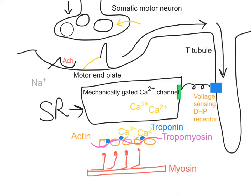Here we have the myosin. What's now going to happen is we can continue the sliding filament mechanism, remembering that it is the release of phosphate that triggers these myosin heads to bind to the binding sites on the actin. Once the ADP is released, it then is going to go from its 90-degree angle to its 45-degree angle, and as a result, the actin molecule will be moved towards the M line.